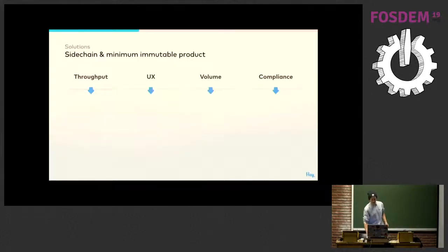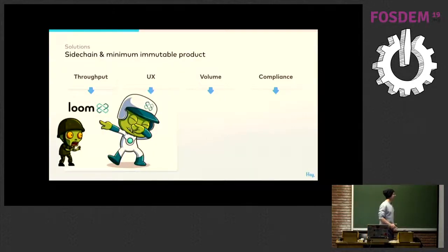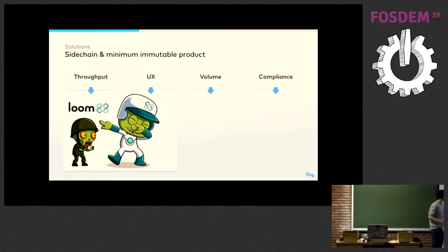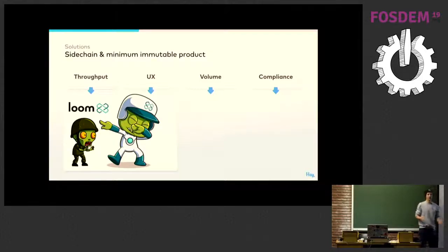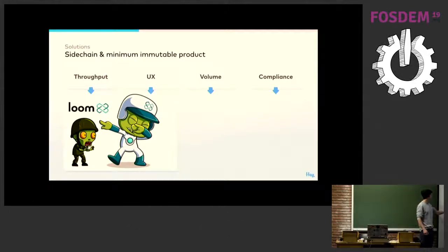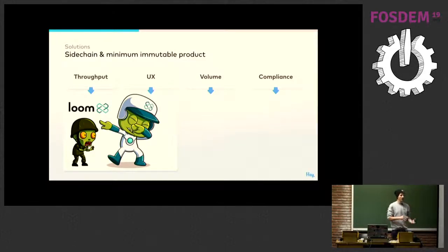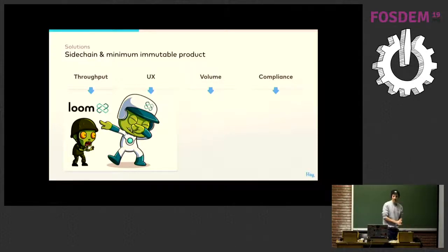Faced with these challenges, after quite some thought, we came up with two solutions. For the throughput and UX challenges, we decided to resort to a sidechain solution. We chose technology provided by Loom — they were first known for Crypto Zombies, a series of tutorials about how to learn Solidity. They've developed sidechain technology to support gaming and social use cases, which was the perfect fit for what we're trying to do at Hay.